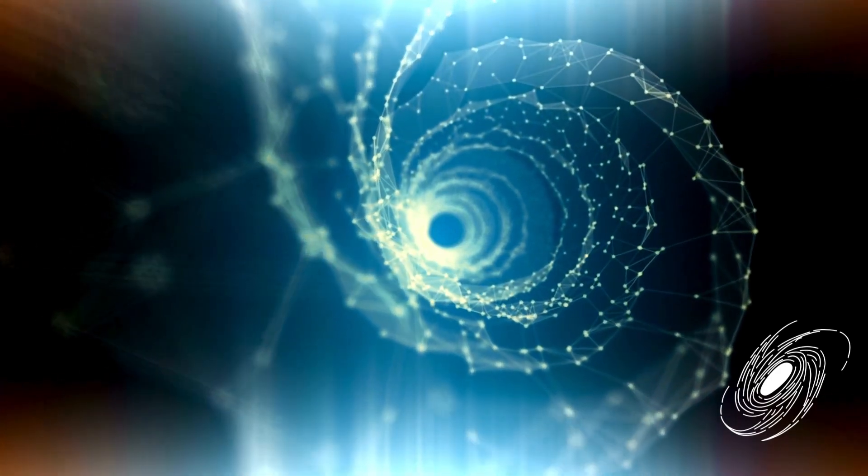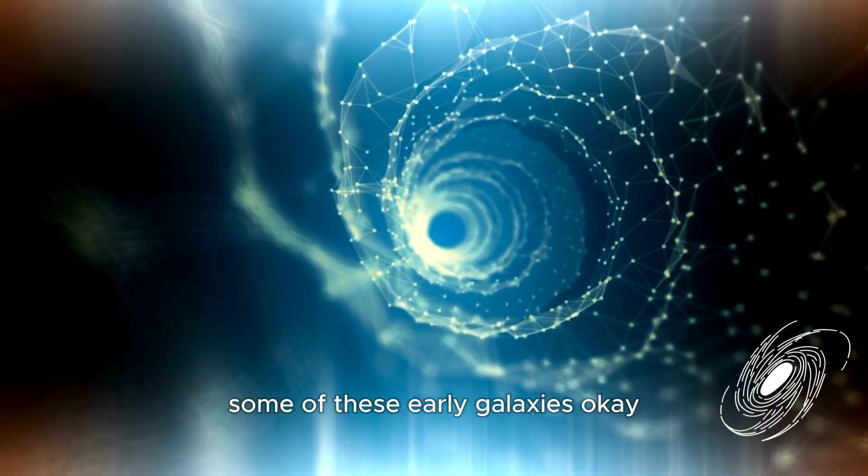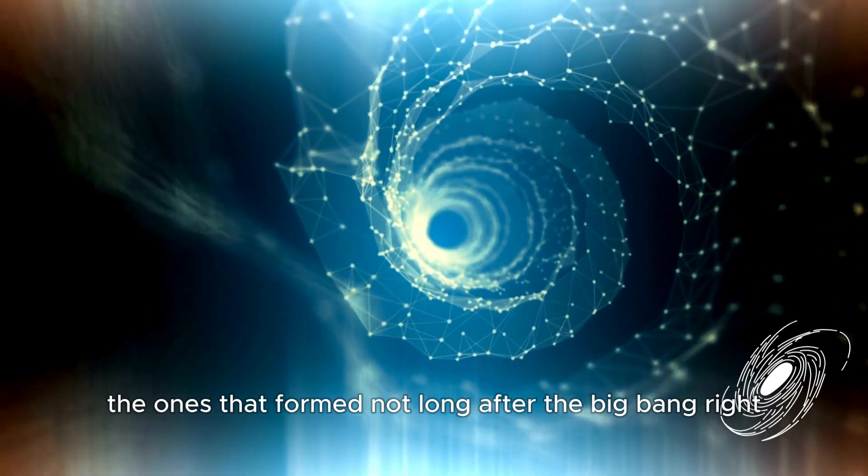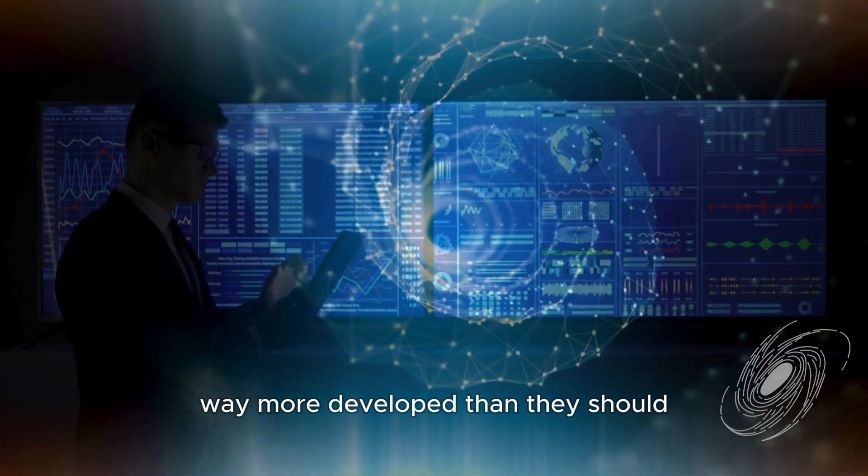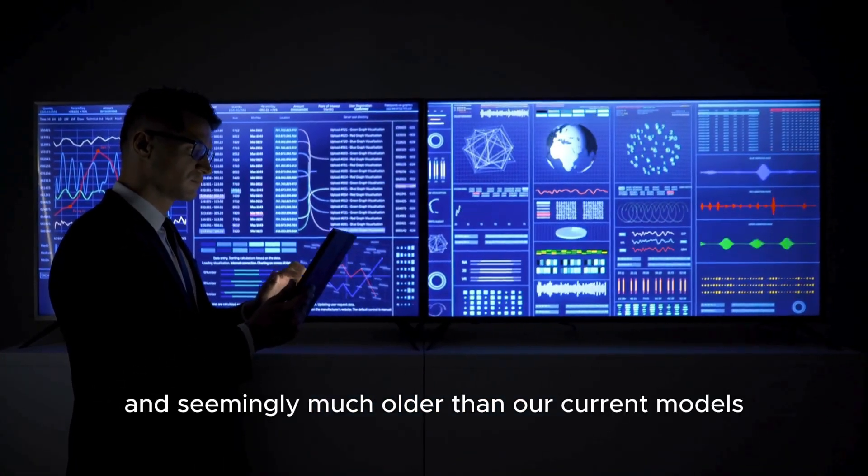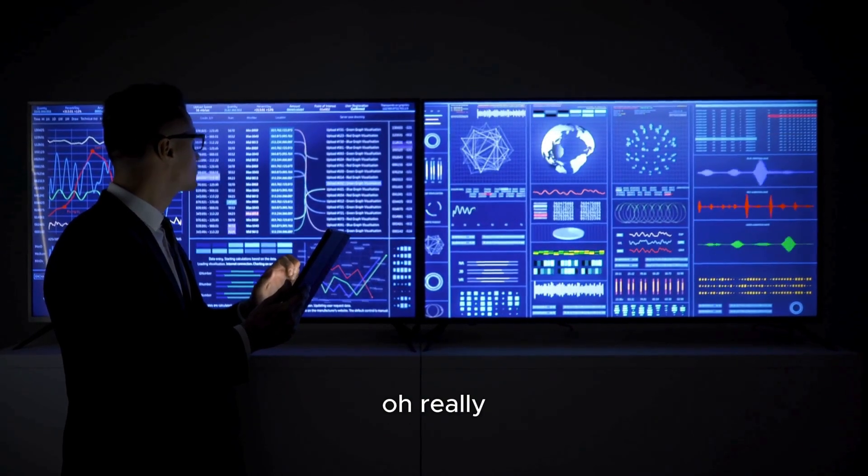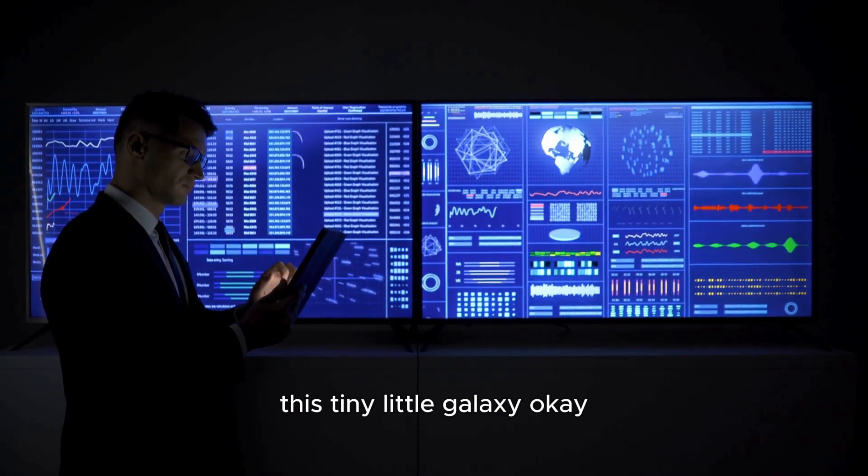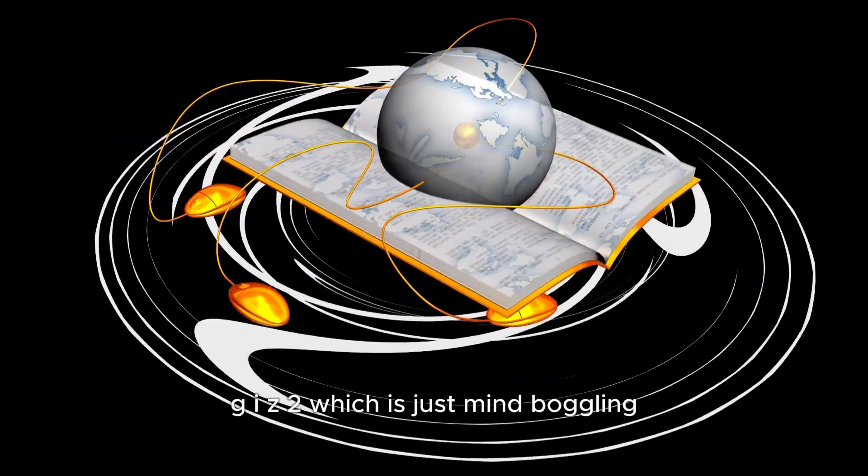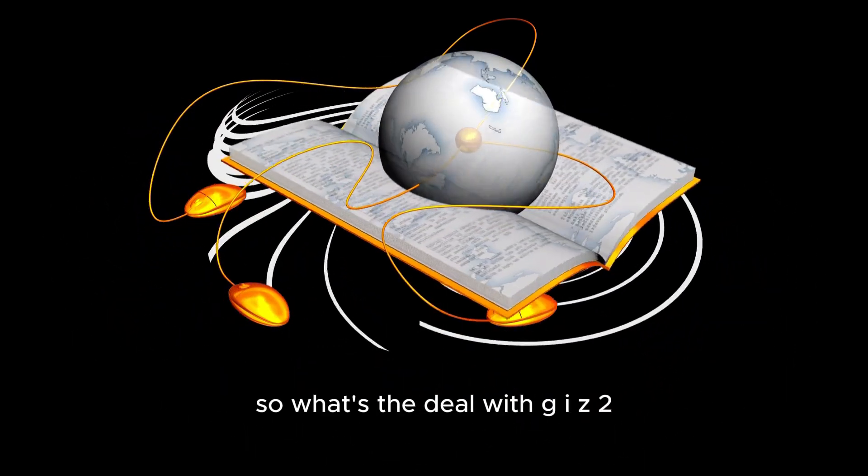So one of the things that has everyone buzzing is that some of these early galaxies, the ones that formed not long after the Big Bang, they look way more developed than they should. They're smaller, denser, and seemingly much older than our current models suggest. And there's one in particular, this tiny little galaxy called GIZ2.